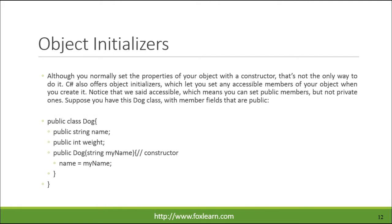Although you normally set the properties of your object with a constructor, that's not the only way to do it. C# also offers object initializers, which let you set any accessible members of your object when you create it. Note that we say accessible, which means you can set public members, but not private ones.